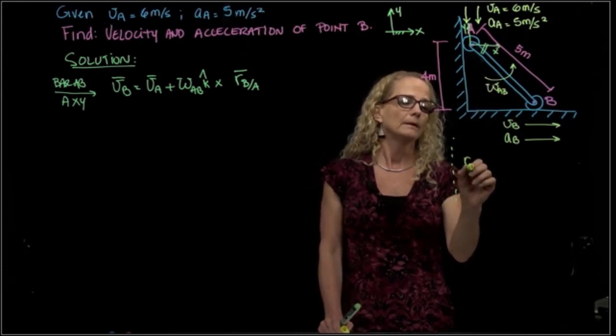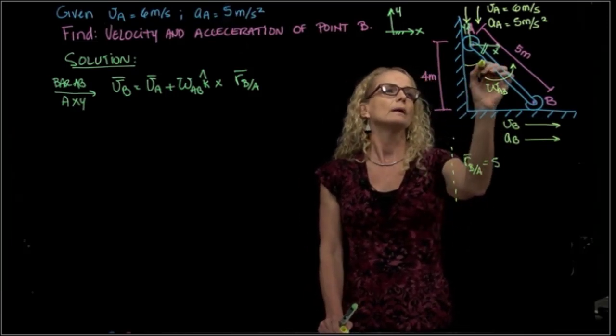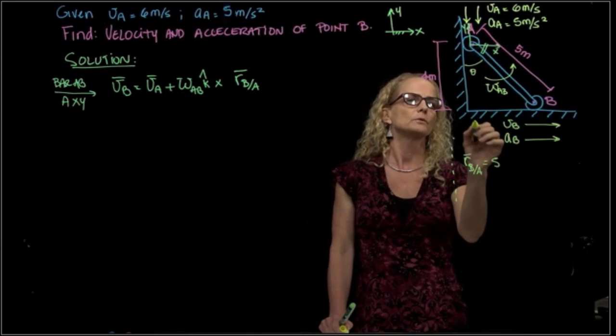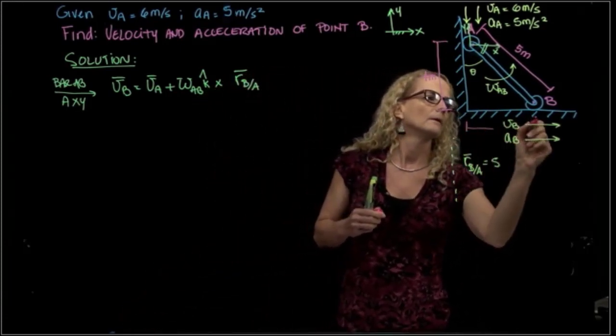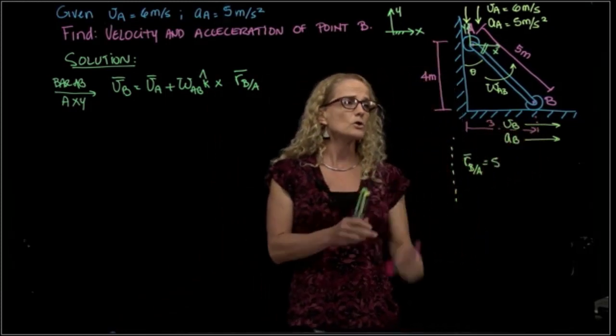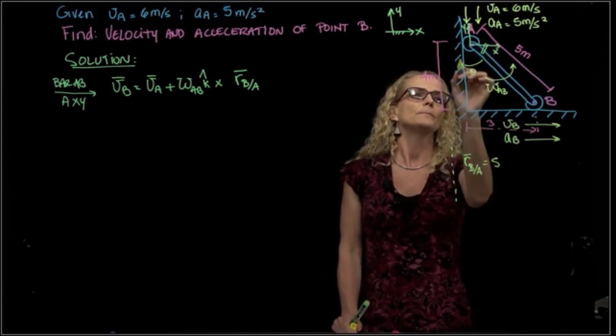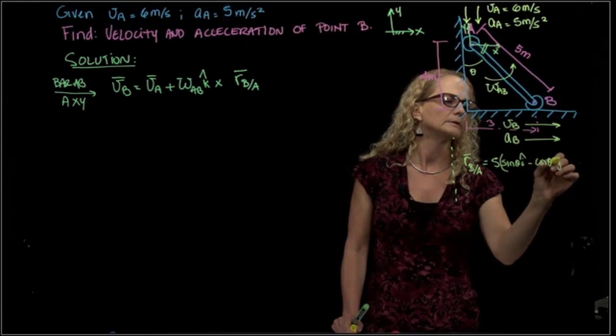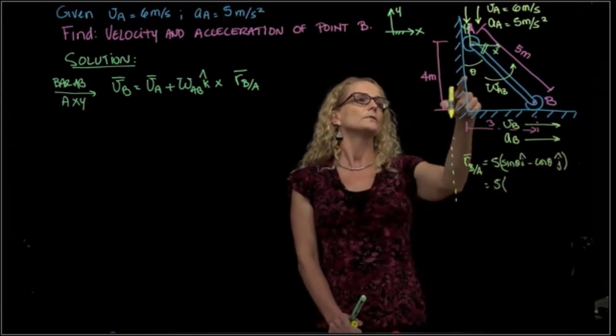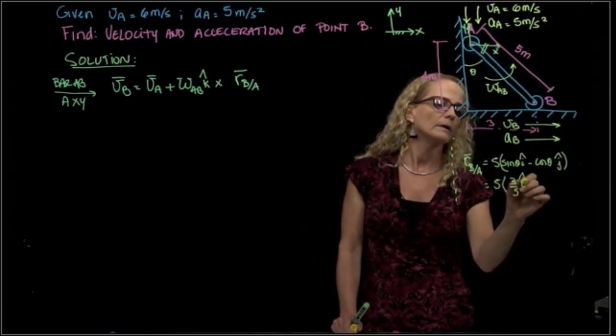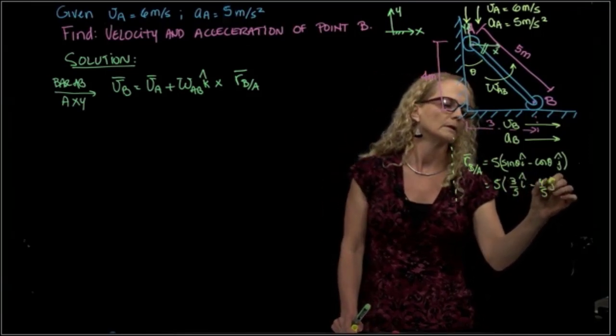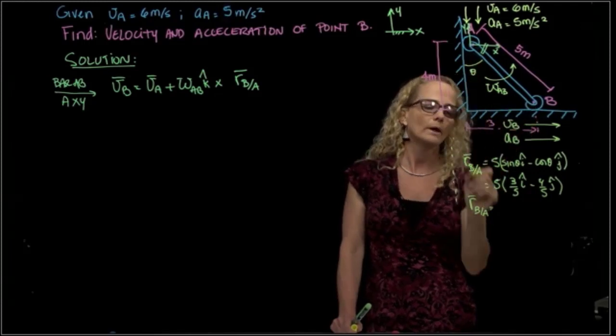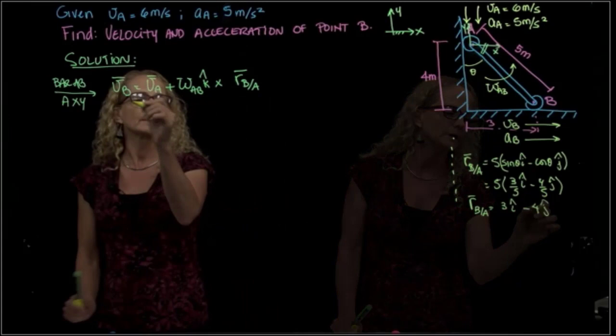Let's decompose that vector. That vector B respect to A will be 5, and we name this angle theta. If this is 4, you remember that typical triangle that we use. If this is 4 and this is 5, this has to be 3. So it will be, for X will be sine of theta in I, and in Y will be minus cosine theta in J. That will be 5 times sine of theta, which is 3 over 5 in I, and cosine will be 4 over 5 in J. So finally, we can write that position vector from B to A will be equals to 3I minus 4J.